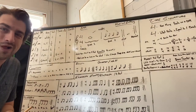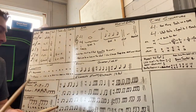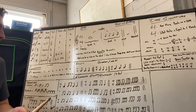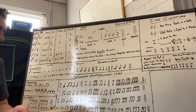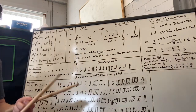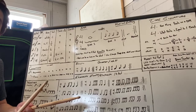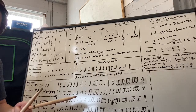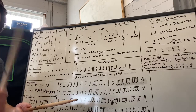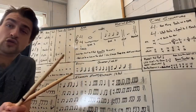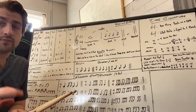Let's count it: four e and a, one e and a two e and a three e and a four e and a, one e and a two e and a three e and a four e and a. Very good.